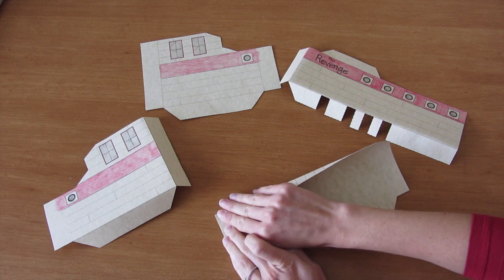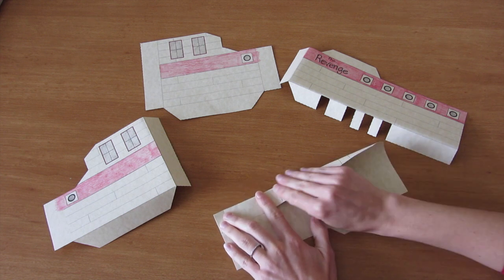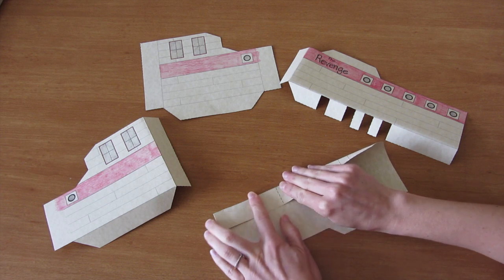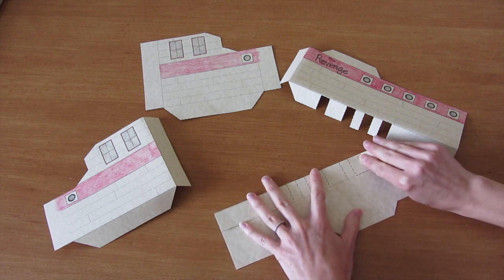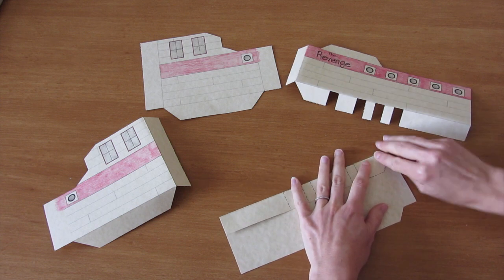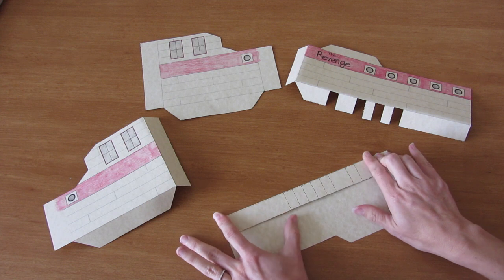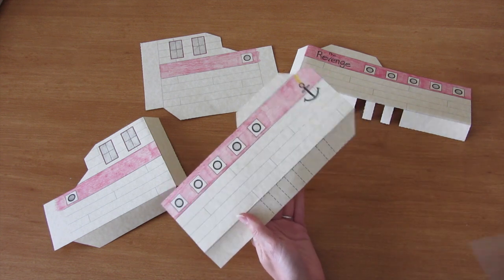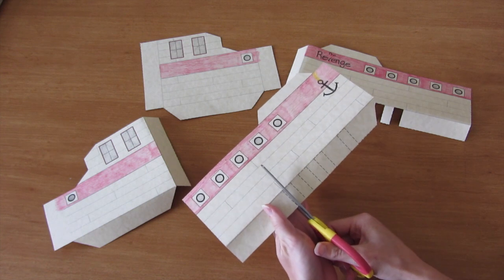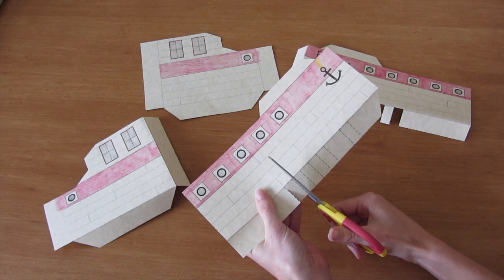And your ship will come together much better if you're really careful about making your folds right on the line and pressing them down good. So I'm going to go ahead and make this fold all the way across. And after you've made the fold, it's a little easier to cut out each of these tabs.